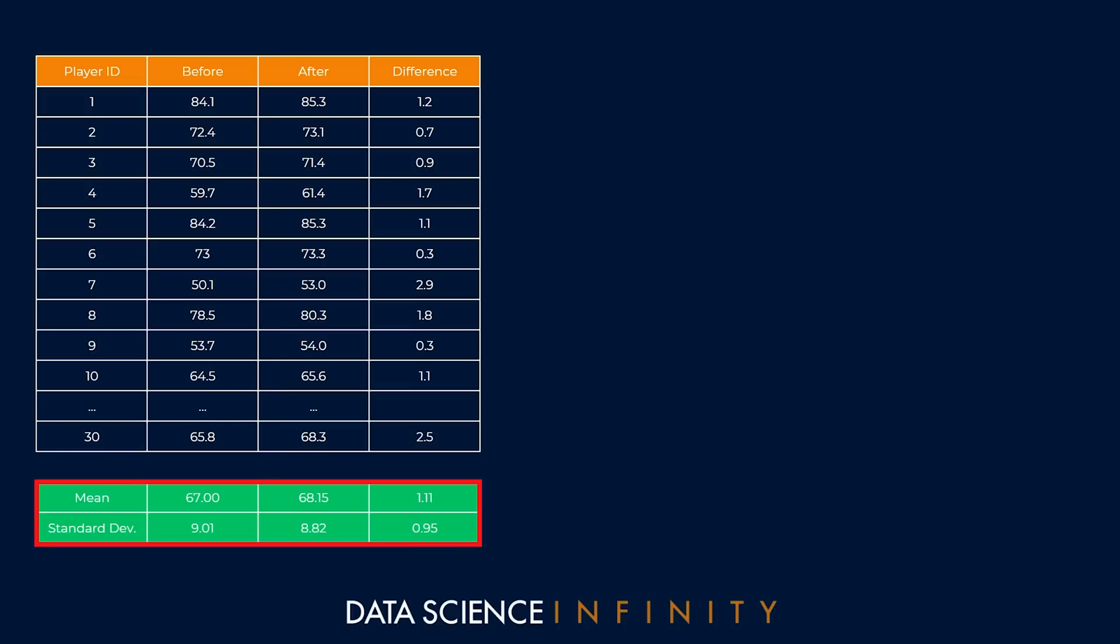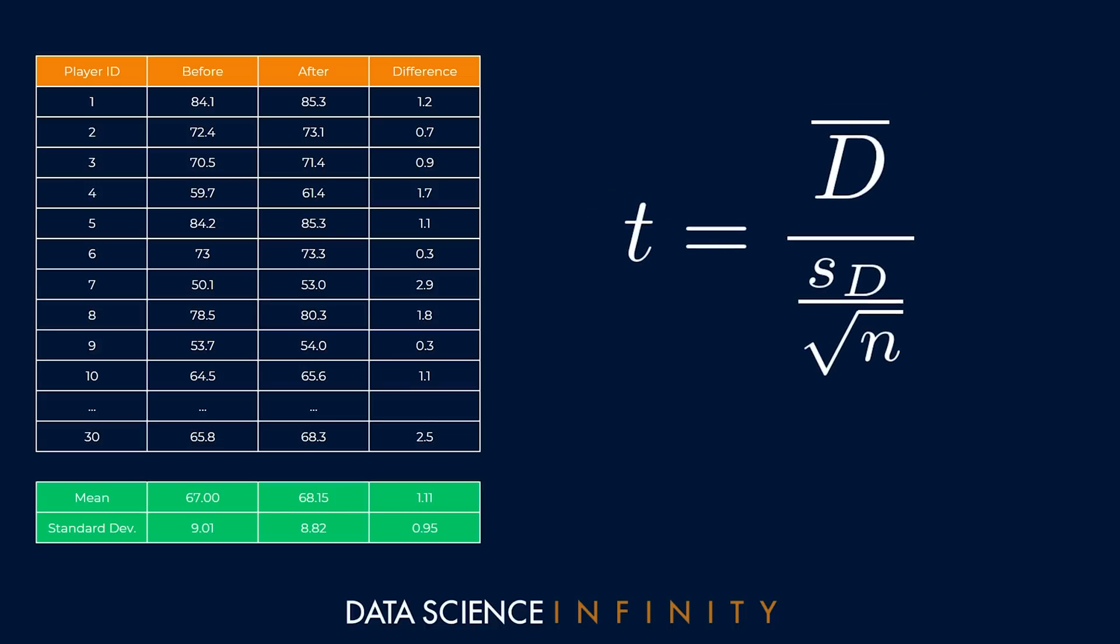At the bottom in green we have the mean and standard deviation for the before scores, the after scores, and the differences. If we take a closer look it does appear like there's been some improvement at least in terms of the overall mean, so 67 centimeters before and 68.15 centimeters after. But looking at changes in the mean alone is not what we are here for. We want to be more rigorous, so let's keep moving. For our paired t-test this data is going to need to go into this formula.